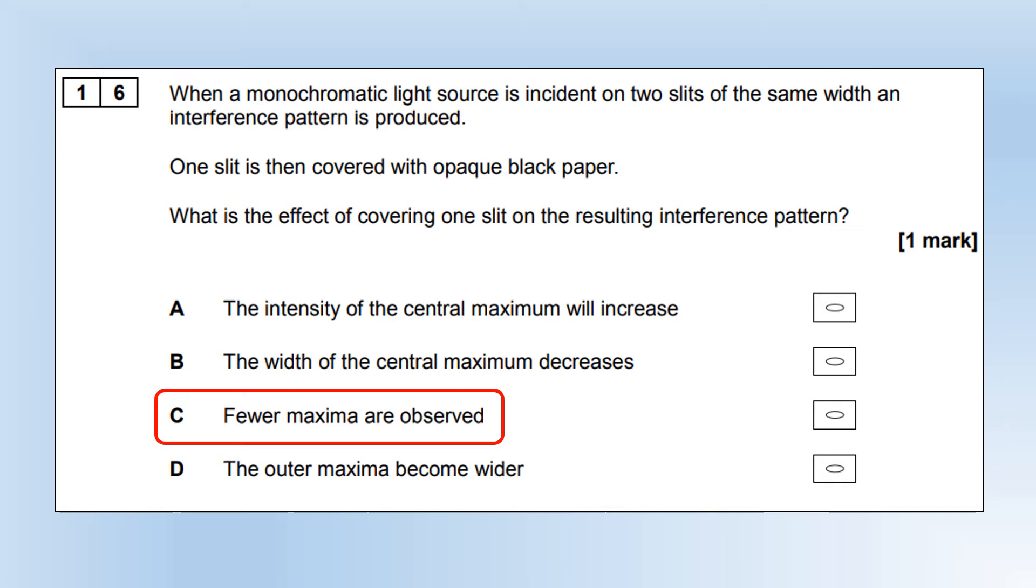What we're also going to have is the fringes are going to be spread out much further apart. That's my logic for thinking if we're spreading further apart, if we have the same screen, we're not going to see as many maxima being produced. Given that the maximum angle we can see them is at 90 degrees, we're going to have fewer maxima in that space if we have a much wider central maximum.